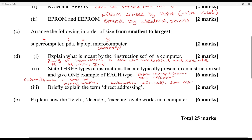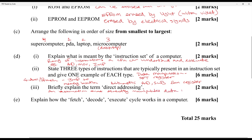Briefly explain the term direct addressing. To give a solid example: set register, jump to memory location, or subtract from a register. Always go extra on the example because it proves that you understand and can apply it. Direct addressing is an instruction that directly manipulates a register or memory address — meaning there is no pointing to another spot.